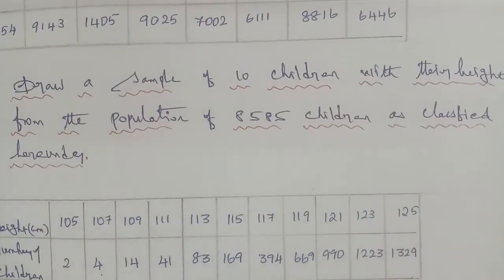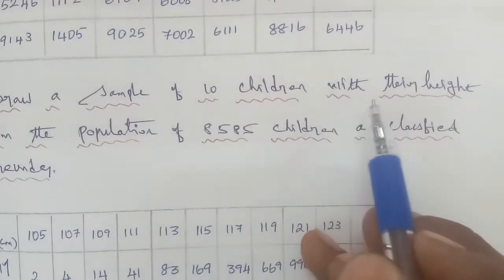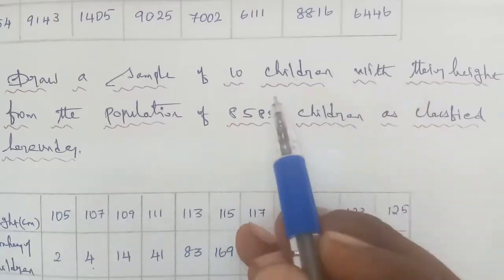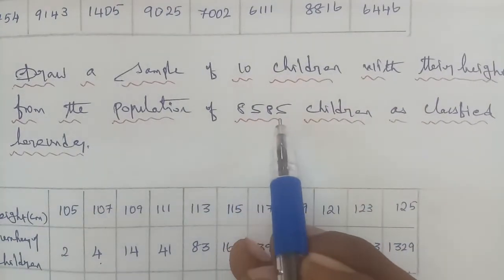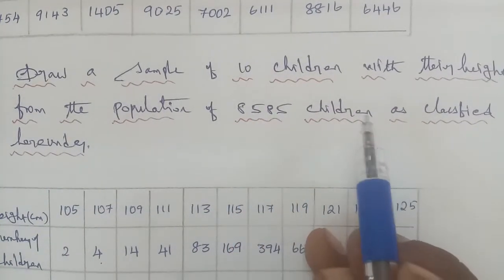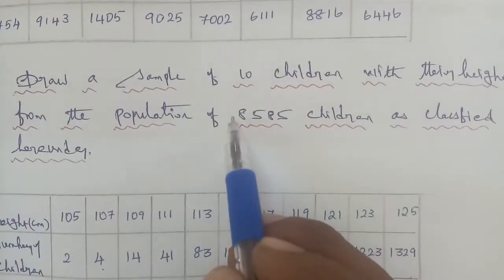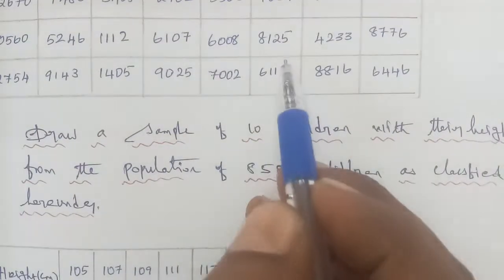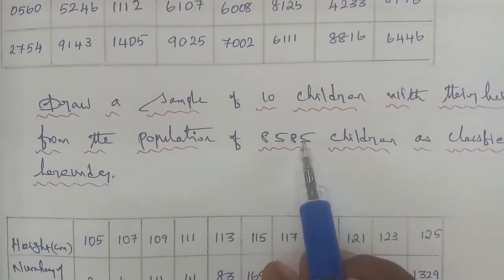We want to choose 10 children as a sample. So we choose 10 children from the population of 8585. We can choose 8585 as our population size and select 10 children from it.